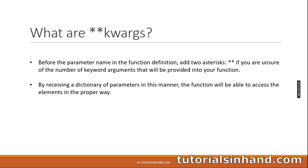In the case of **kwargs, the argument is received in the form of a dictionary, unlike *args where the arguments are received in the form of a tuple. You can use these arguments in the function body to do some tasks and then finally return an output.